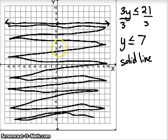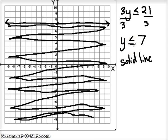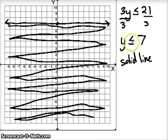Let's do a little test to make sure we shaded the right part. We shaded 3, so it should be a true solution — is 3 less than or equal to 7? Yes, 3 is less than 7. What about negative 3? Negative 3 is definitely less than 7, so it should be in the shaded region. What about the unshaded region? Is 9 less than 7? No, so it shouldn't be shaded. Is 11 less than 7? No, it shouldn't be shaded either.